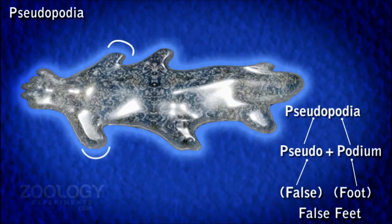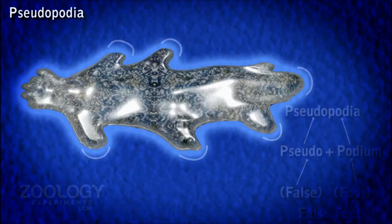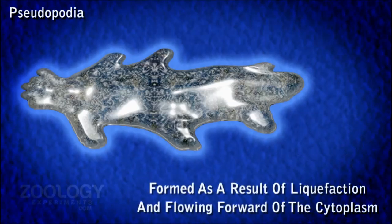These are of variable size and are capable of projecting out or withdrawing, often with considerable speed. These are formed as a result of liquefaction and flowing forward of the cytoplasm.